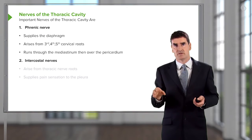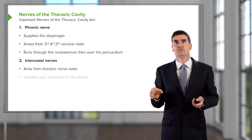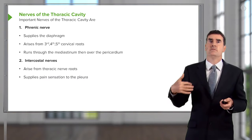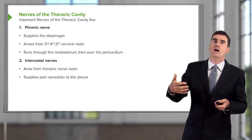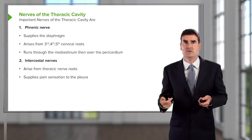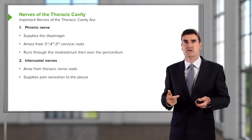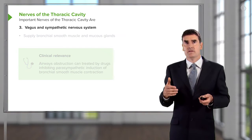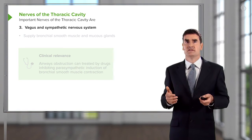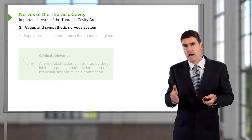The intercostal nerves, which we've also described already, arise from their respective nerve roots and run under each rib. They provide pain sensation to the pleura and to the overlying chest tissue.